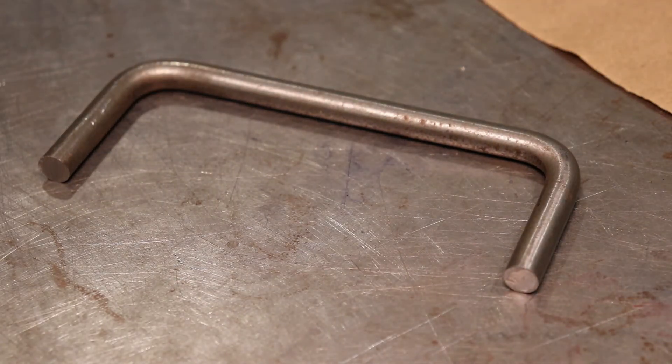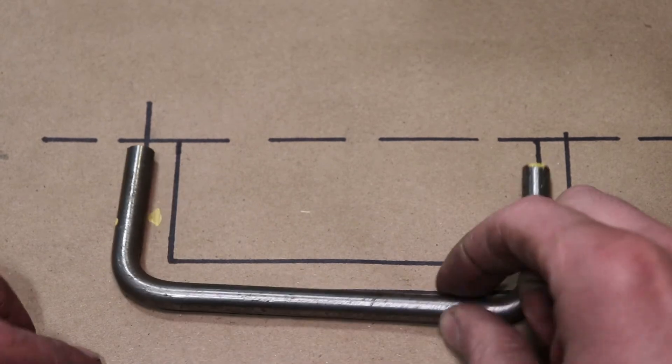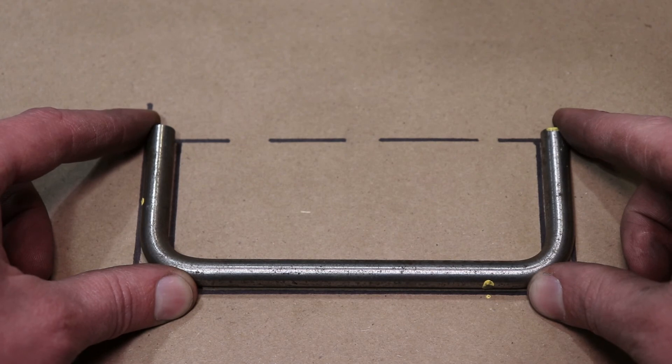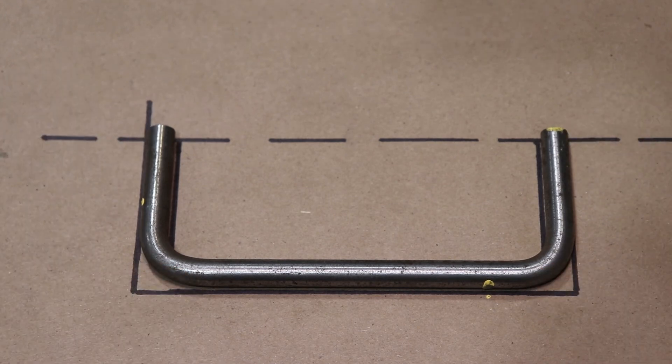So you can apply this to a lot of different bending setups on the Haasfeld, just knowing where to put that witness mark. Use a test bend and then use a drawing and you'll have a lot of success.